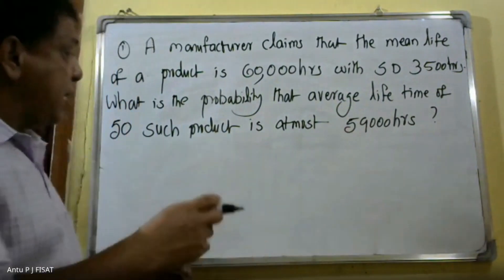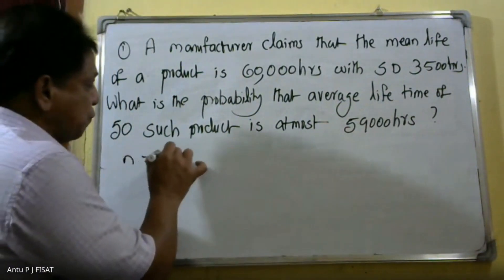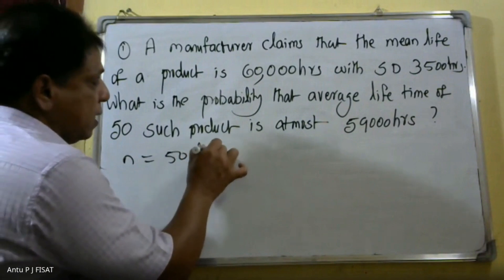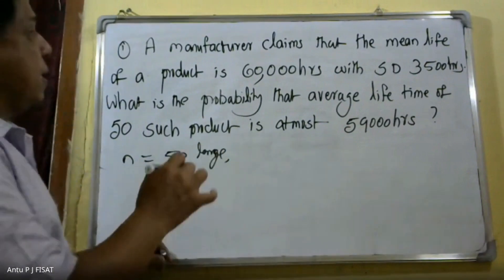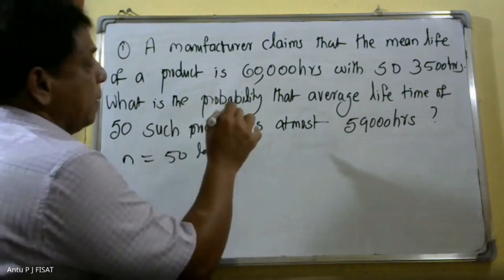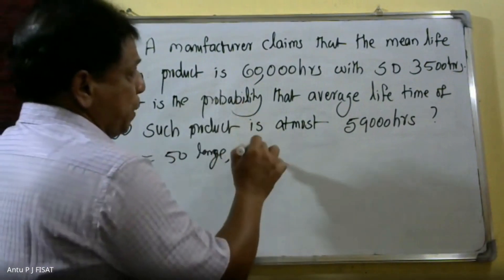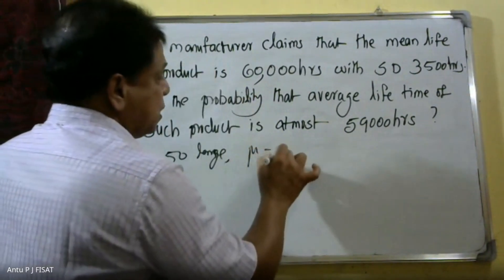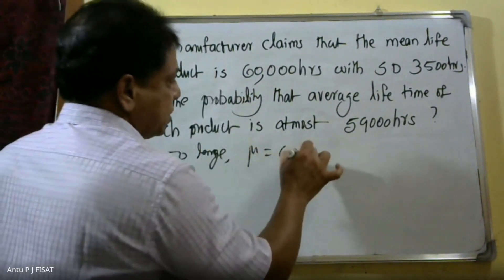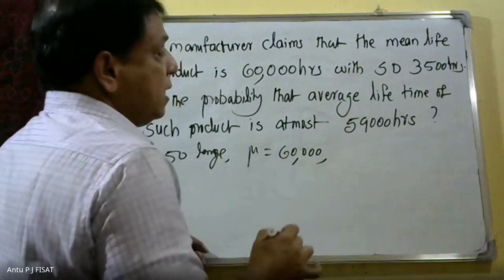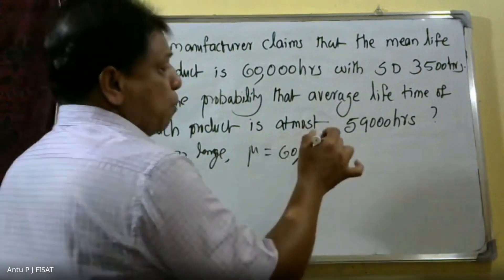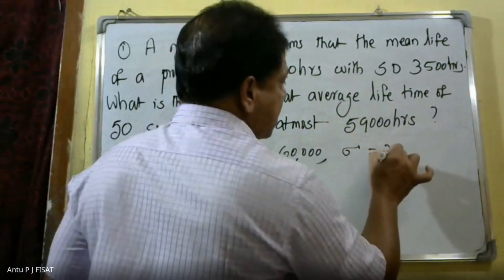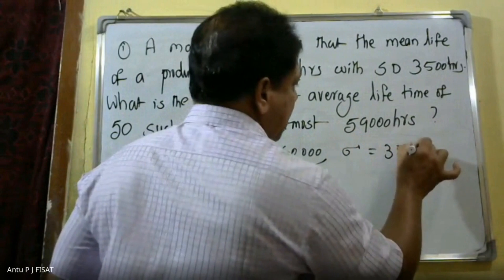Here n is equal to 50, that is the sample size. The population mean mu is 60,000, and the population standard deviation sigma is 3,500.